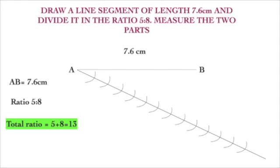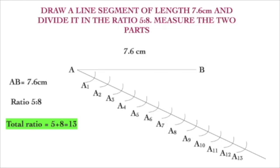We started from point A, where that line made an acute angle with the given line. Now name the arcs as A1, A2, A3, A4, A5, A6, A7, A8, A9, A10, A11, A12, A13. The third step: join the endpoint of the line and the last division, that is the thirteenth division. Now we have to divide this in the ratio 5 is to 8.